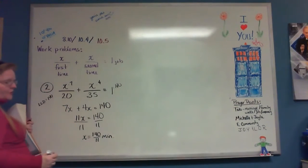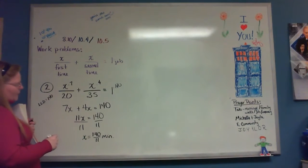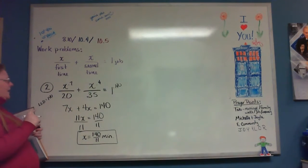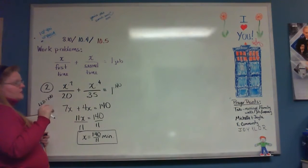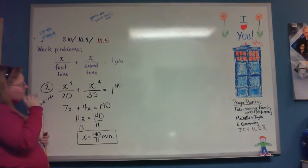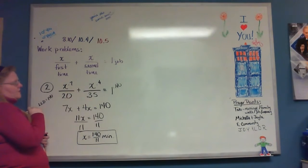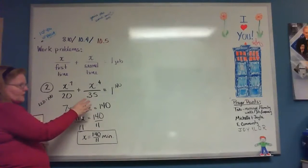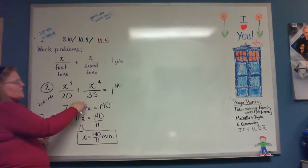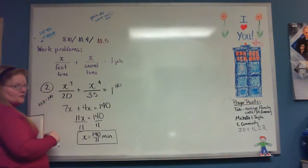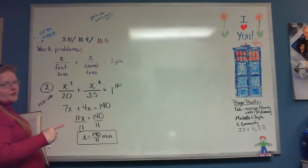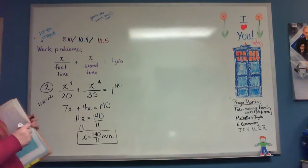If you wanted to, you could use a calculator and figure out that's 12.73 minutes. Now, finding that LCD of 140 could be tricky. You can always use the product of the two numbers — 20 times 35 — as your common denominator. It just means the fraction will reduce down at the end. I went with the least common denominator to keep numbers as small as possible.